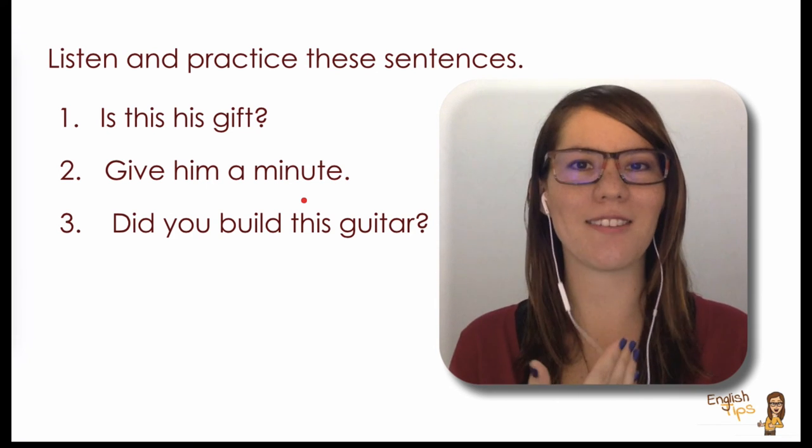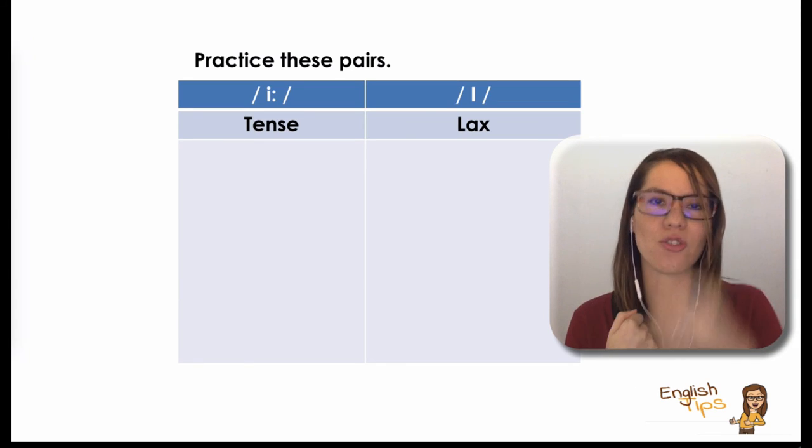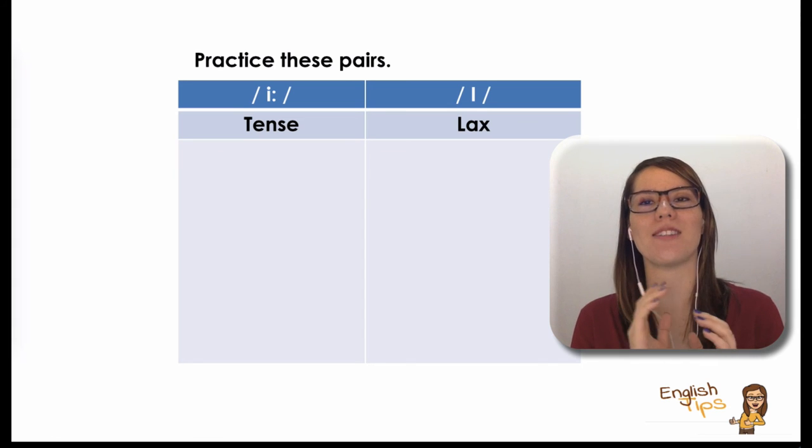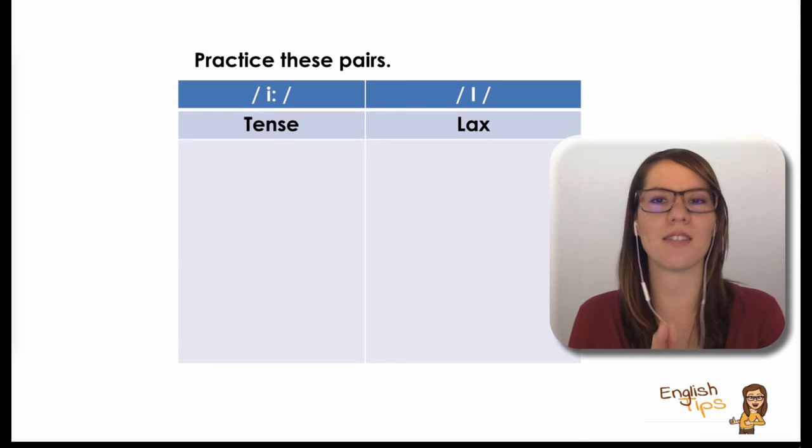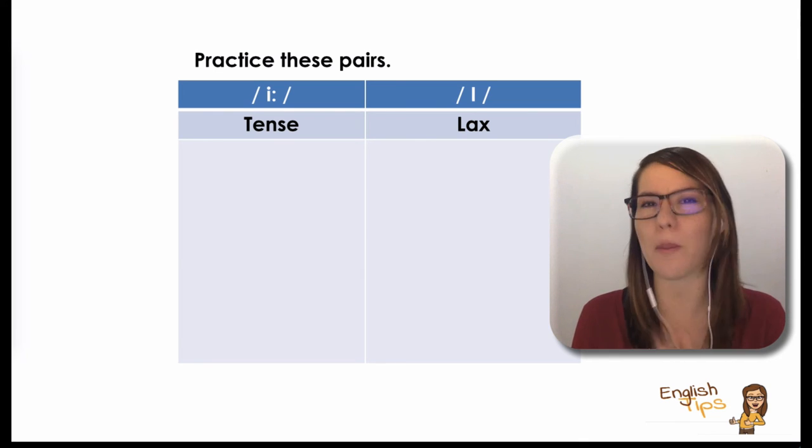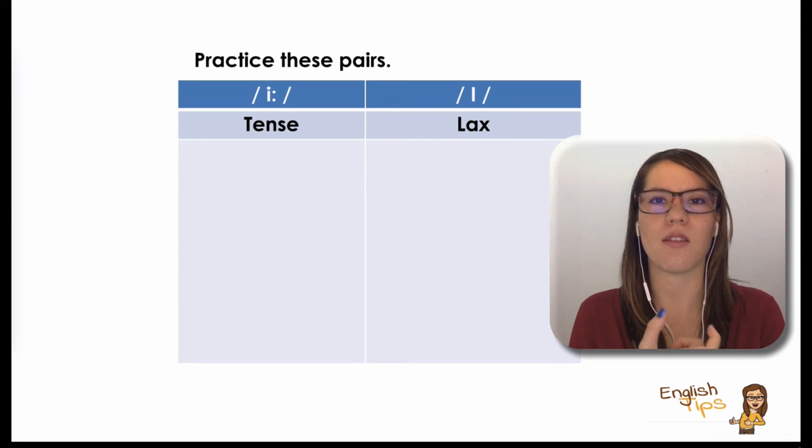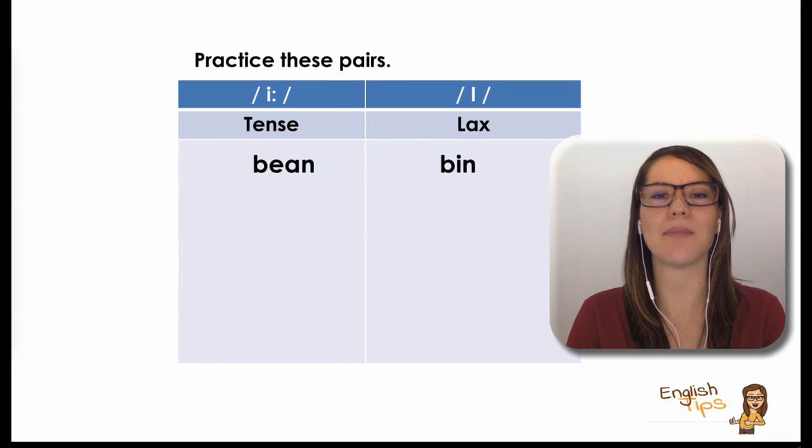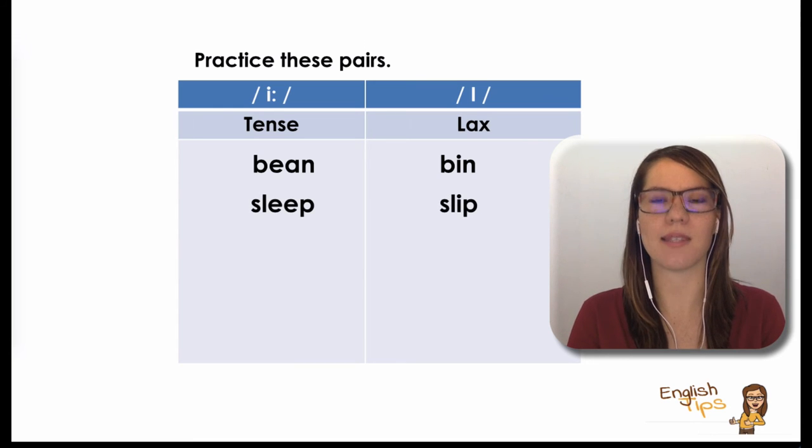Number three: Did you build this guitar? Did you build this guitar? So if you feel that you need more practice, go back and repeat the sentences. Very well, so now we're going to have a very important exercise in which we're going to compare words that have the tense sound or the lax one. And for this one again, I'm going to ask you to repeat and practice if you need to. Pay attention to my lips and imitate the way I move them, please. So the first pair would be bean and bin. Then we have sleep, slip.